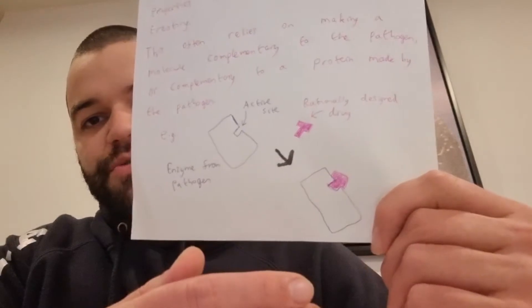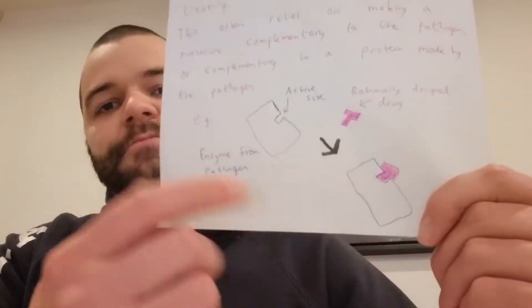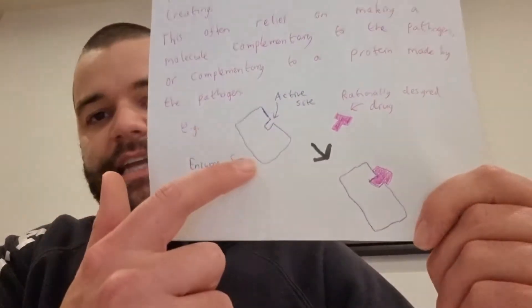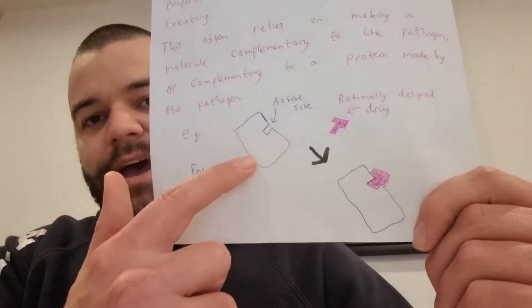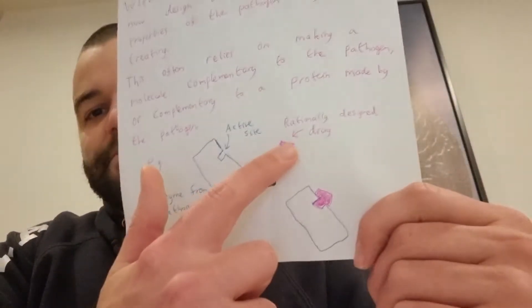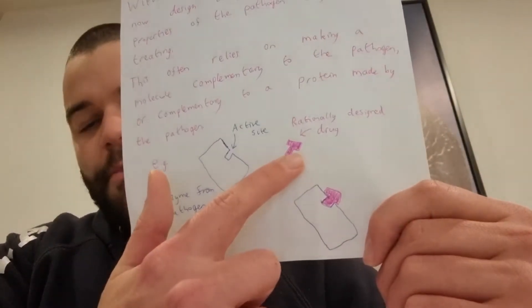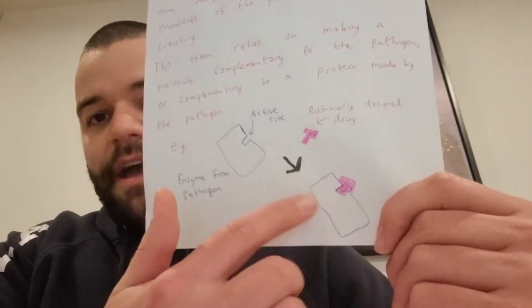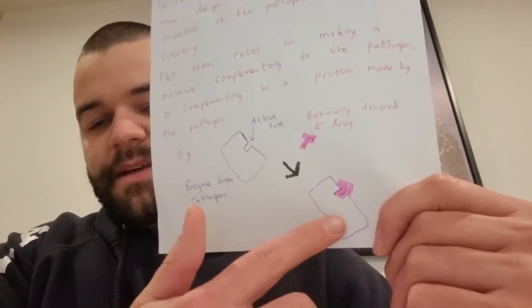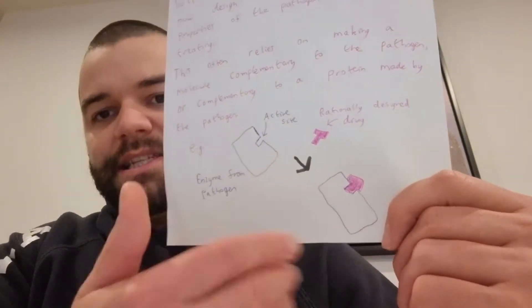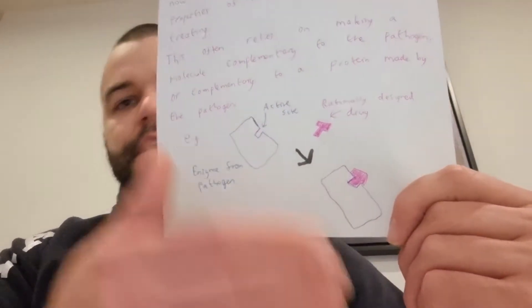That's the idea of rational drug design. We've studied the enzyme made by the pathogen and we've made something with a complementary shape to it, so that will stop the enzyme from functioning in its normal way.